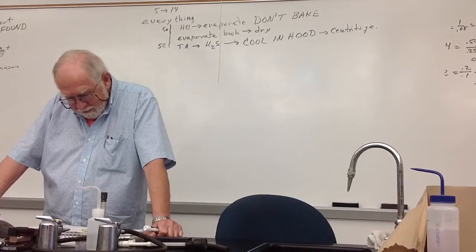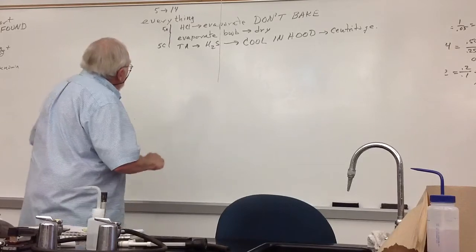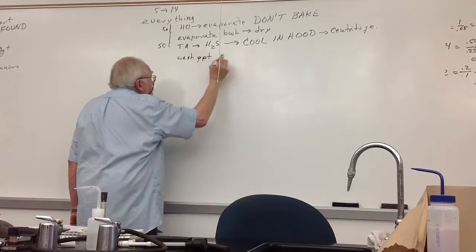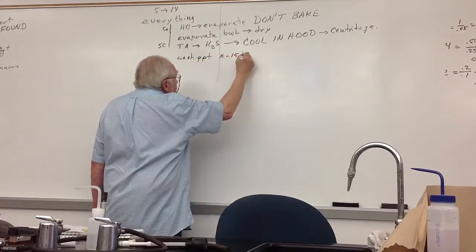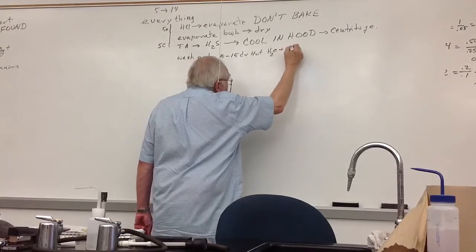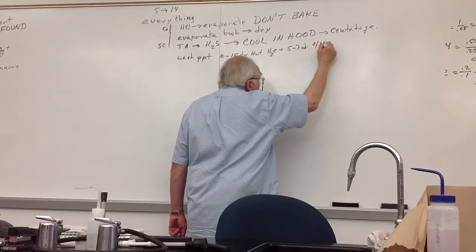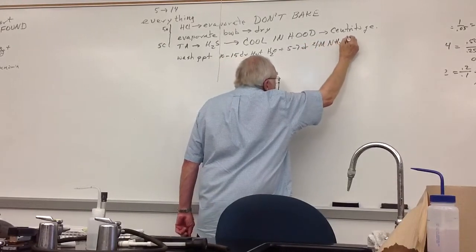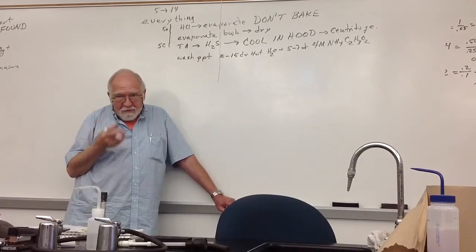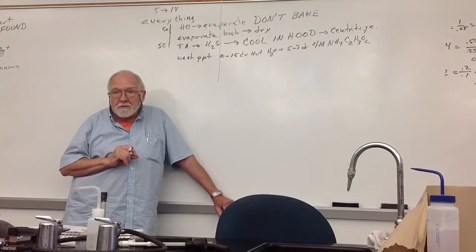It says 20 drop portions of a hot solution by preparing equal volumes of water and one molar ammonium acetate. Ours is a little more concentrated. So when you wash the precipitate, you can use ten to fifteen drops hot water plus five to seven drops four molar ammonium acetate. People read that and they think, oh, I have to mix up a solution of ammonium acetate and water and heat it up and use it.